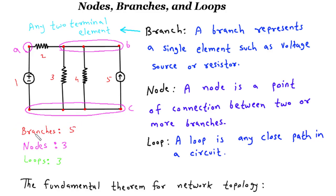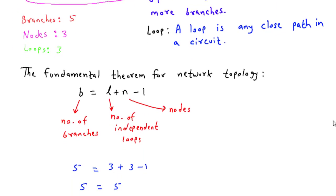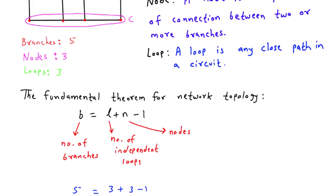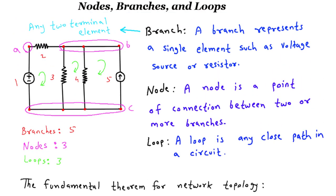The branch, loop, and node relation equation, B equals L plus N minus 1, helps us analyze and understand the interplay between these elements. By applying this equation, we can determine the number of branches, loops, or nodes in a circuit. I hope you found this video informative and helpful. Thank you for watching, and stay tuned for more exciting content.